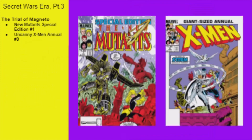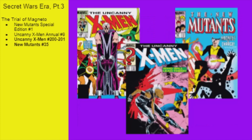This leads right into New Mutants Special Number 1, which is continued directly into X-Men Annual Number 9. Magneto's trial picks up in X-Men 200, which sees the X-Men and New Mutants arrive after their annual adventures. Issue 201 sees Storm and Cyclops battle for the leadership of the X-Men, with Storm winning and Cyclops leaving for good again. Magneto then settles in in New Mutants 35.